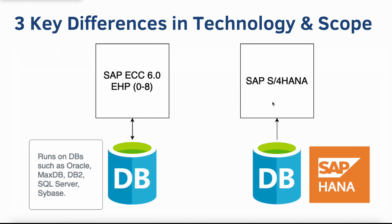The next main technical difference is that the ECC system can run on multiple different database types such as Oracle, MaxDB, DB2, SQL Server, and Sybase. But S4HANA can run only on the HANA database, which is SAP's in-memory database. So if a SAP customer is currently running ECC on Oracle or any other non-HANA database, they need to migrate to the HANA database when moving to S4HANA. This means the customer must either hire new employees with HANA skills or upskill their current database team in HANA technology.